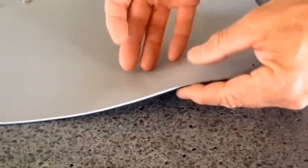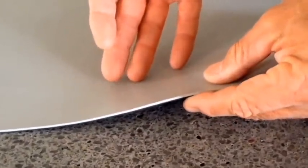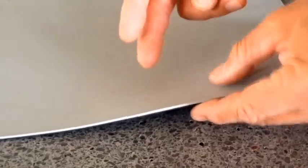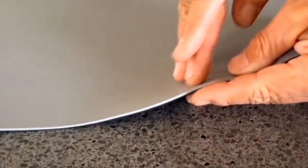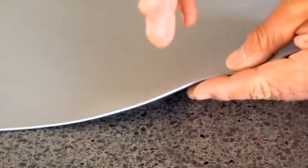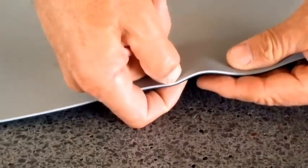Here we have a static control mat. Now static control matting comes in either single layer, two layer like this one - it's conductive on the back surface and static dissipative on the top surface, or it's three layer where it has a conductive layer sandwiched between two static dissipative layers.